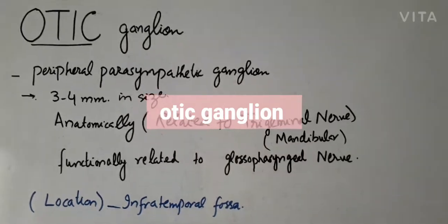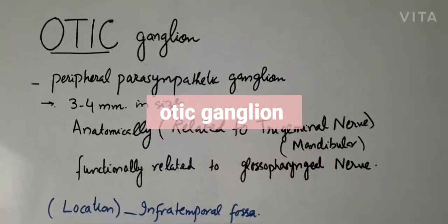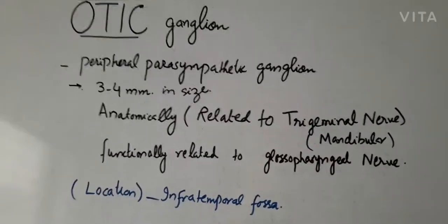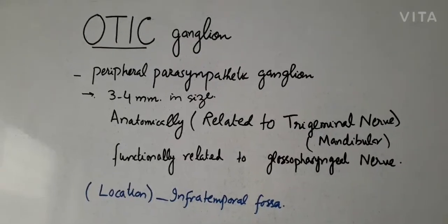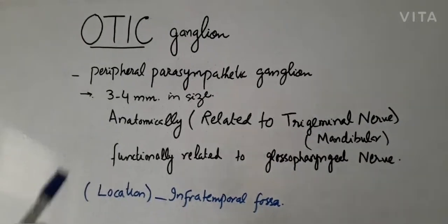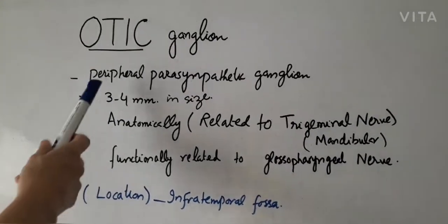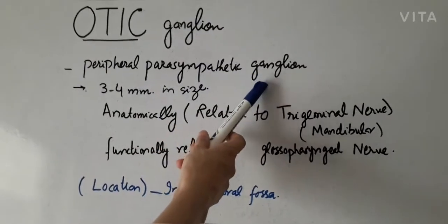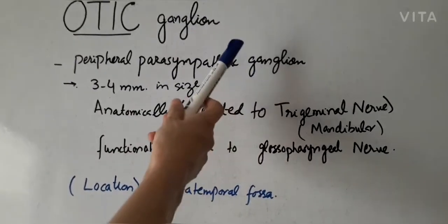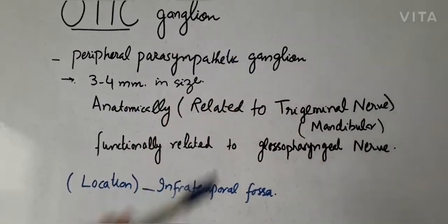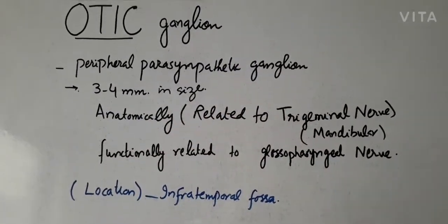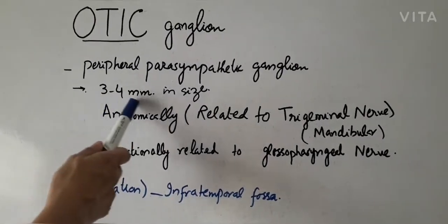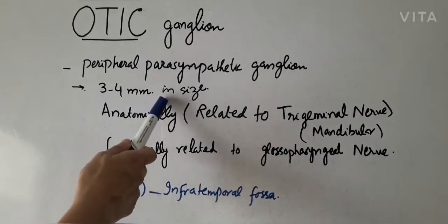Assalamualaikum students. I want to tell you about the otic ganglion and its diagram. This is also a peripheral parasympathetic ganglion — one of the four ganglia present in the head and neck region. It is very small in size, just 3 to 4 mm.